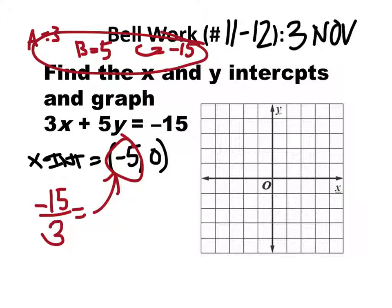Now that we have the x-intercept, let's get that graphed. It's negative 5, 0 — counting 1, 2, 3, 4, negative 5. Right count. The y-intercept: some of you put 5, others put 3, others put negative 3. All of those are incorrect because it needs to be in a coordinate pair.